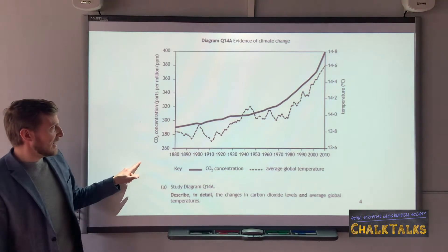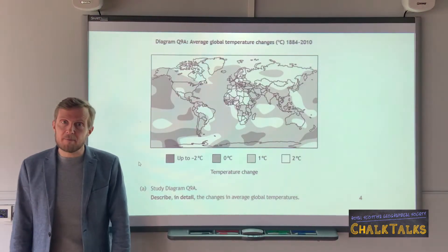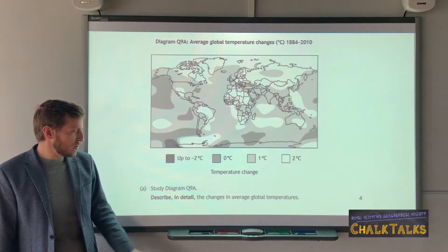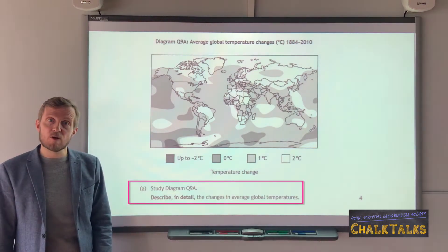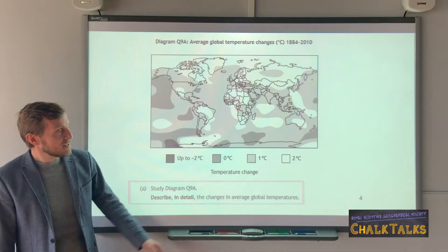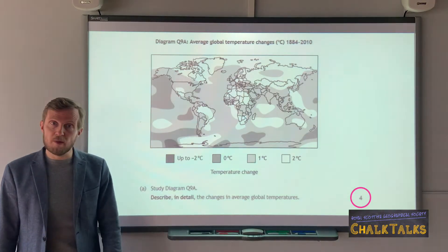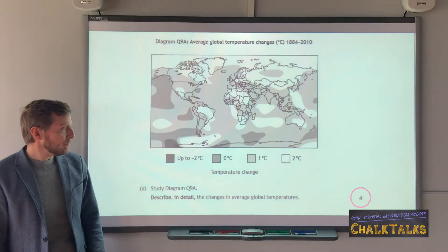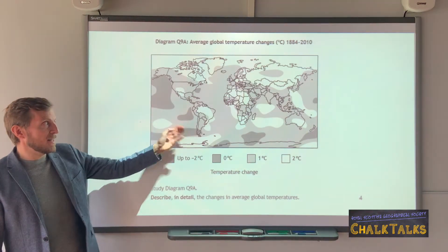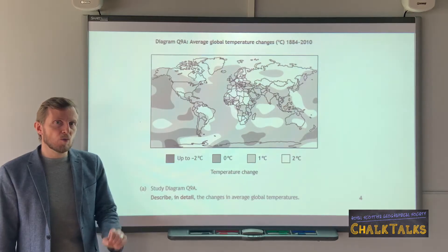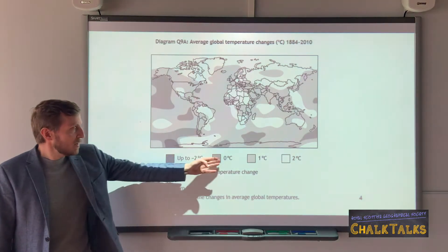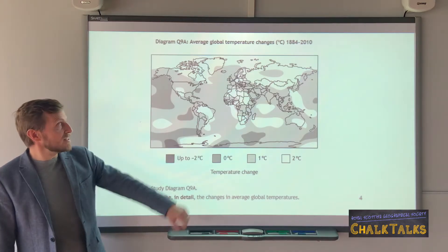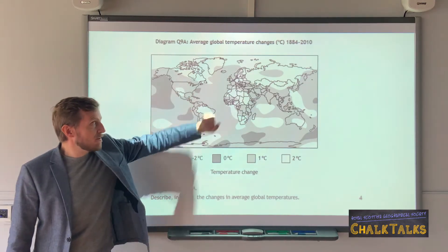In my second example of describing patterns, this time we are looking at a map. The same rule applies: it is a describe question with no requirement to explain, and it is once again worth four marks, meaning I need four statements. This time, however, it is a pattern on a map so I approach it slightly differently. I still want to give data from my key, but instead of referring to dates, I'm going to be referring to areas of the planet.